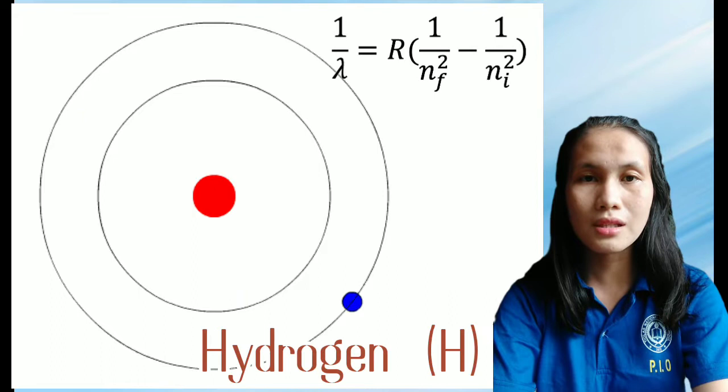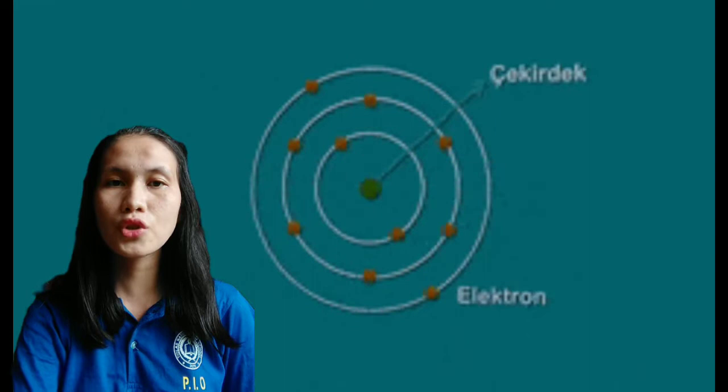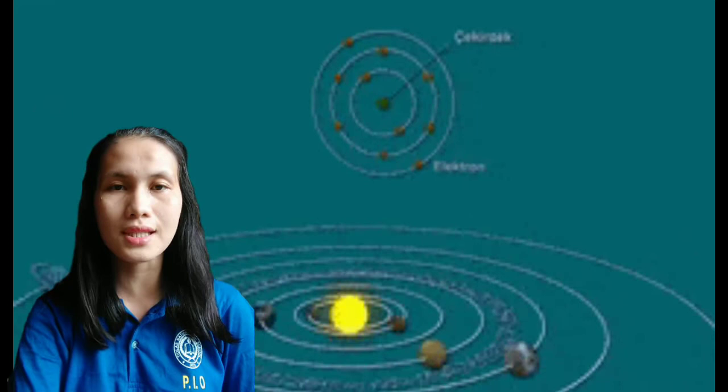Unlike earlier models, the Bohr model explained the Rydberg formula for spectral emission lines of atomic hydrogen. The Bohr model is a planetary model in which negatively charged electrons orbit a small, positively charged nucleus, similar to planets orbiting the sun.